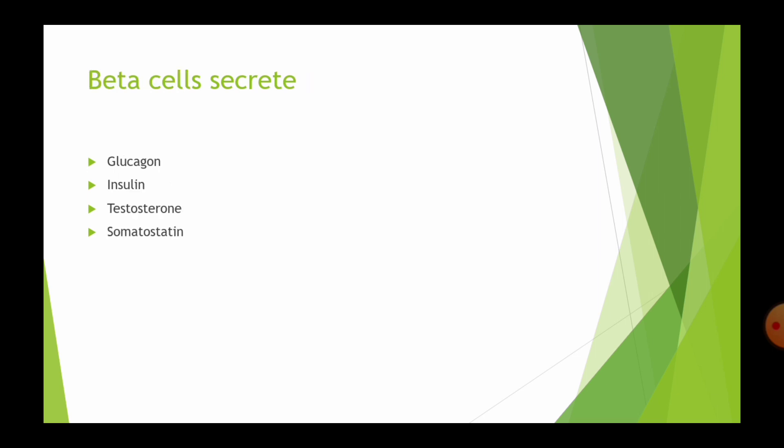Next question, Beta cells of pancreas secrete Glucagon, Insulin, Testosterone, Somatostatin. Beta cells of pancreas secrete Insulin.